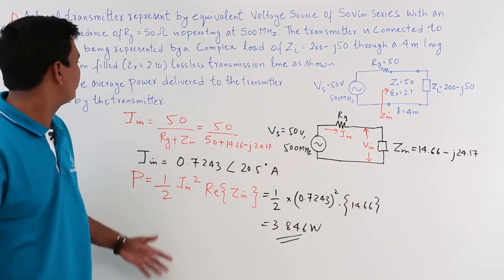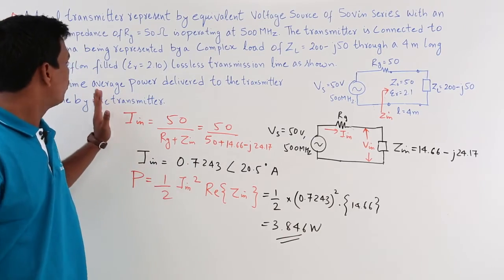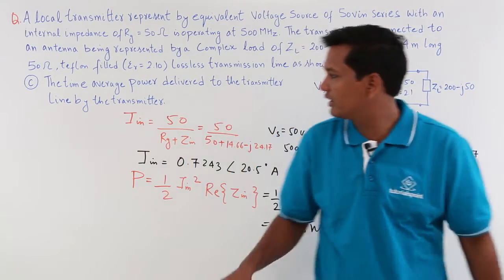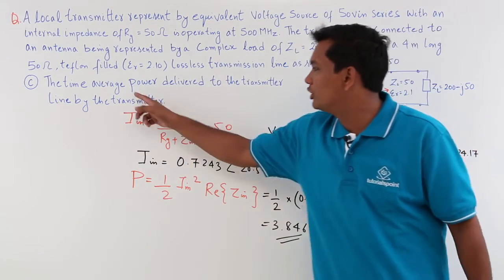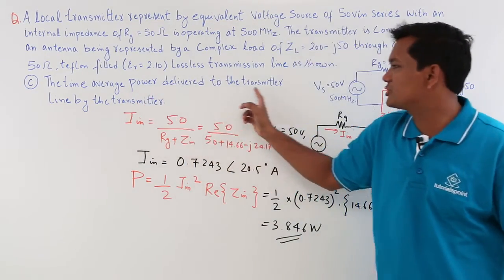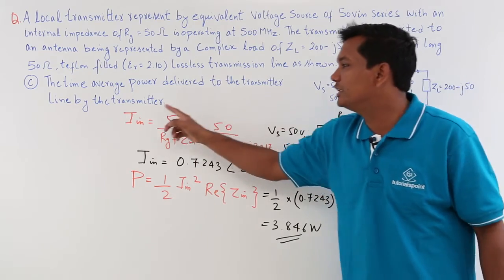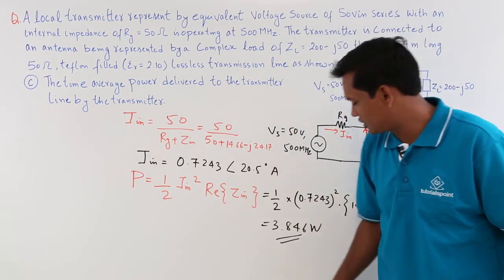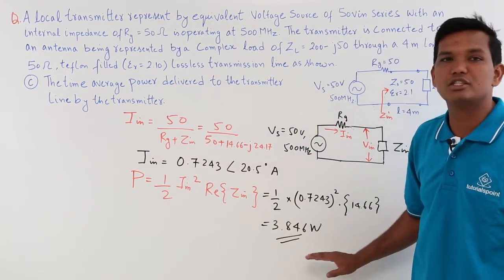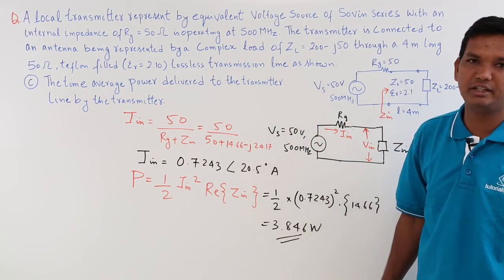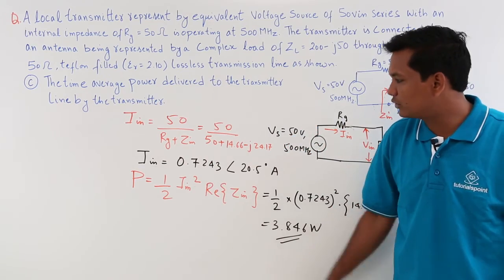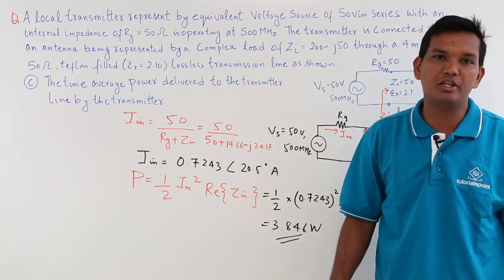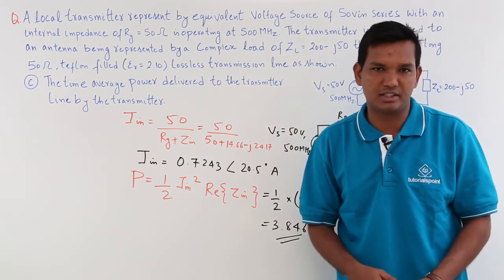So we have concluded and are able to find out the average power delivered to the transmission line by the transmitter, which comes out to be 3.846 watts.